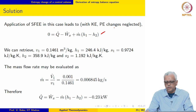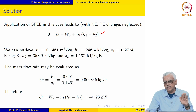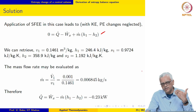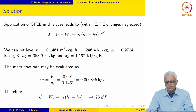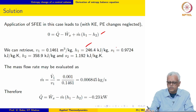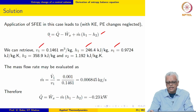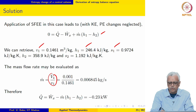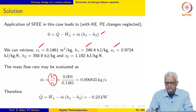Applying the steady flow energy equation, notice it is not explicitly mentioned that the device is insulated, which means there will be some heat interaction between the compressor and the surroundings. Retrieving property values from the table — H_1, S_1, and specific volume at the inlet — the mass flow rate is V̇_1 / v_1, which works out to 0.006845 kg/s. Plugging in the values, the heat interaction is −0.23 kW, meaning heat is being lost from the compressor to the surroundings.